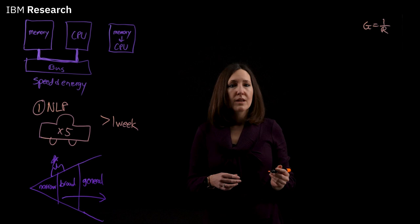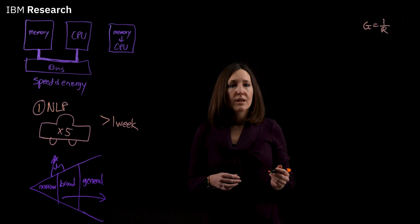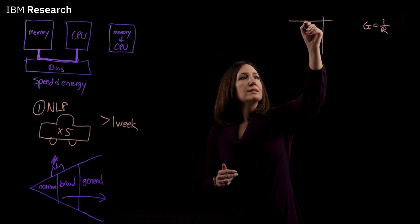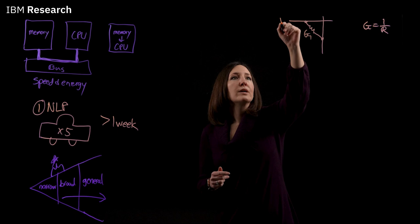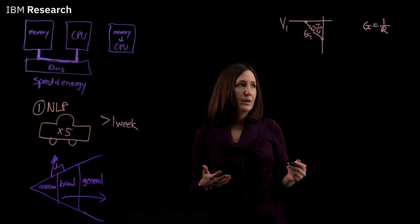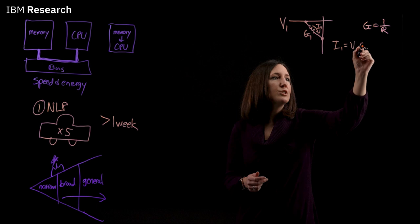If we have a simple crossbar, two metal wires, and we put one of our resistive elements between them, this can be programmed to a conductance G1. We can apply some voltage V1 across it, and then we can calculate the current I1 flowing through our device. And this would just be I1 is equal to V1 times G1. And this is just dictated by Ohm's law.